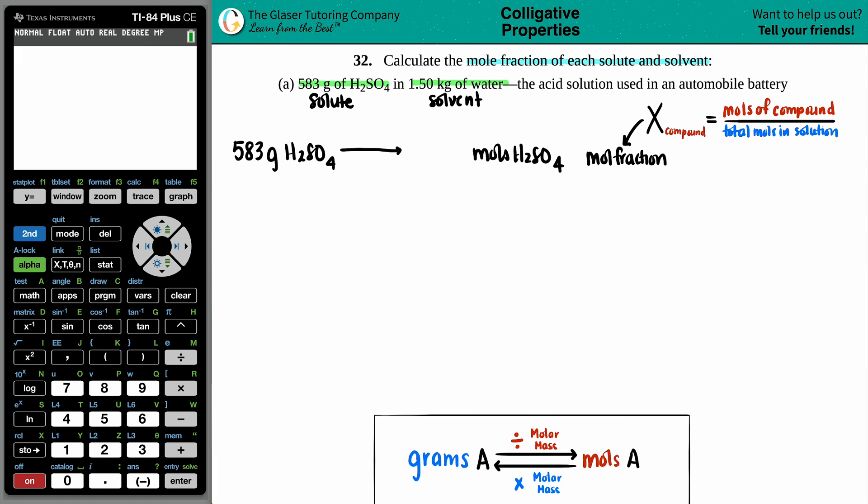I have to do the same thing with the water. They gave us 1.50 kilograms of H2O. Generally we can always go from a gram value to a mole value. But kilograms, the first thing I would do is just convert the kilograms into grams. All you got to do is just times by a thousand. So this would be 1500 grams of H2O.